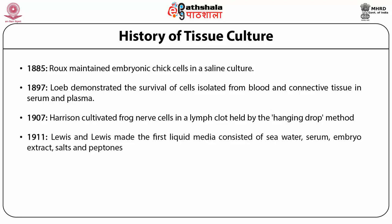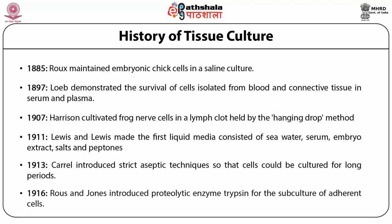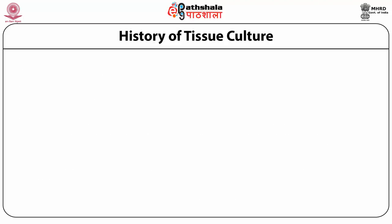In 1911, Lewis and Lewis made the first liquid media consisting of sea water, serum, embryo extract, salt and peptones. In 1913, Carroll introduced strict aseptic techniques so that cells could be cultured for longer periods. In 1916, Rawls and Jones introduced the proteolytic enzyme trypsin for the subculturing of adherent cells. In 1933, Gay developed the roller tube technique for culturing cells.